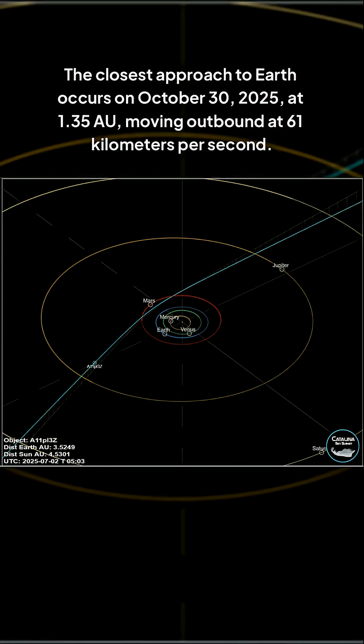The closest approach to Earth occurs on October 30, 2025, at 135 AU, moving outbound at 61 kilometers per second.